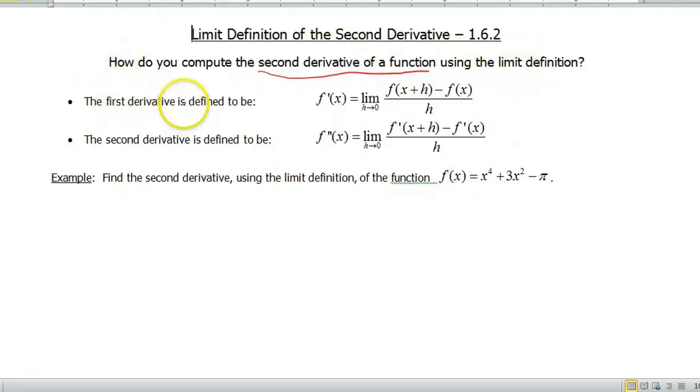So as we've given before, the first derivative is defined to be f prime of x is equal to the limit as h approaches 0, f of x plus h minus f of x all over h. The second derivative is defined in a similar fashion. So the second derivative of x is equal to the limit as h approaches 0, the first derivative at x plus h minus the first derivative all over h.